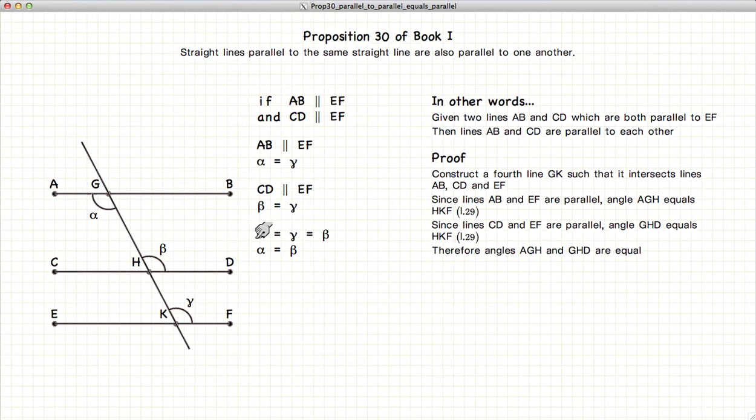So we have alpha equals gamma, which equals beta, therefore alpha equals beta. According to Proposition 28, if the interior and opposite angles are equal, then the two lines are parallel. We've just demonstrated that AB is parallel to CD.